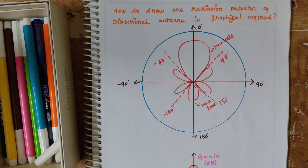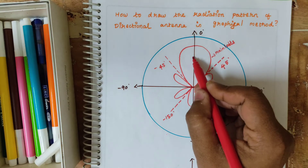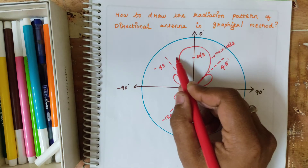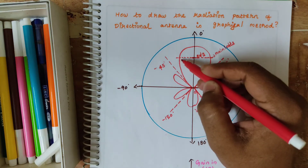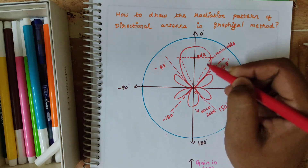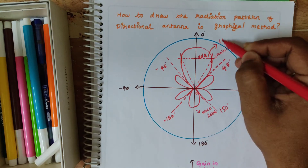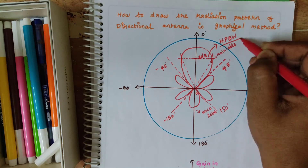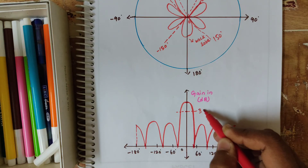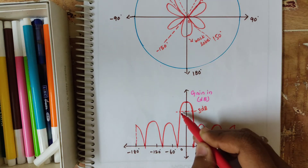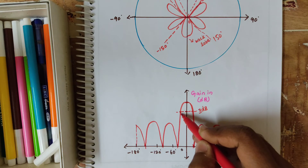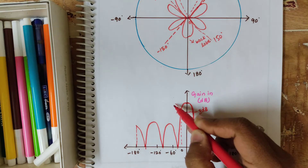Next we see about half power beam width. The half power beam width is the angular width of the major lobe from maximum to 3 dB down. For this assumption there is a 3 dB line here — W1. So here we have a 3 dB line like this, and this is the half power beam width.